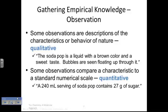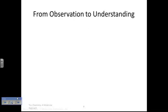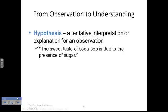If we say something like, the soda pop is a liquid with a brown color and a sweet taste, bubbles are often seen floating through it - those are observations just using our senses. We're not explaining a thing, we're just sharing what we are observing. Some observations compare to a characteristic of a numerical value. I can tell you quantitatively exactly how much soda pop I have in a serving - 27 grams of sugar per 240 mLs of serving. Sometimes observations rely on numbers, that's called quantitative. Sometimes observations rely just simply on our senses, and those would be called qualitative.